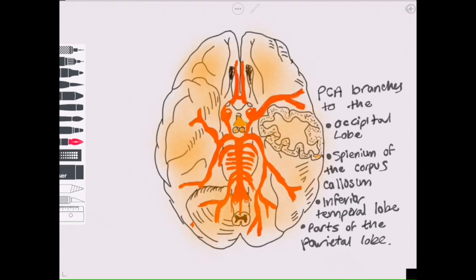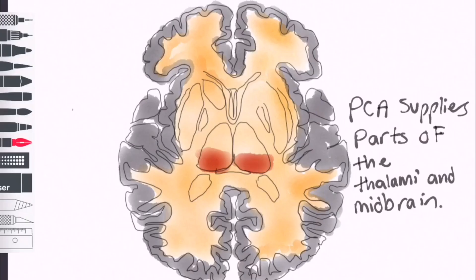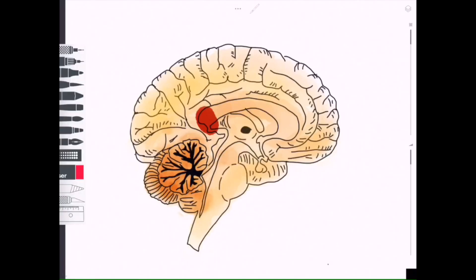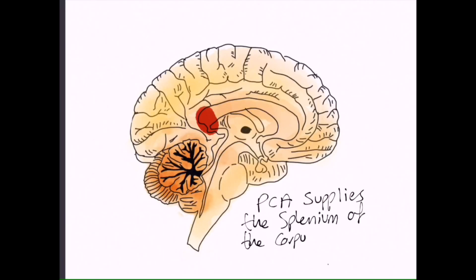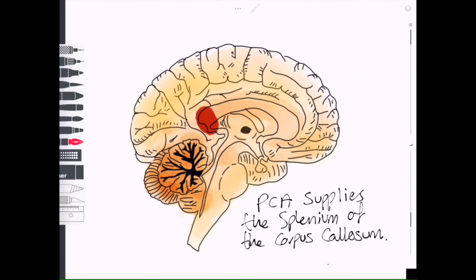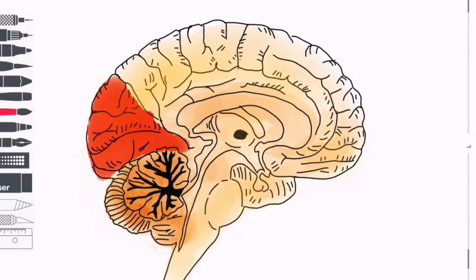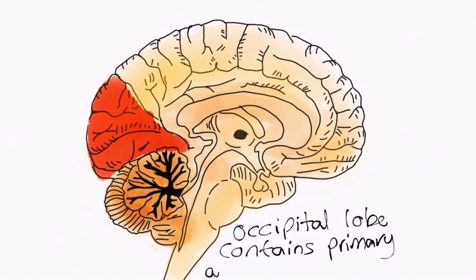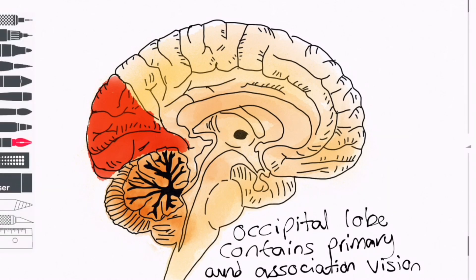Now we'll move on to talk about the function of the areas of the brain it supplies. The thalamus is an important relay centre for our ascending and descending tracts between the cortex and the body. The splenium of the corpus callosum carries fibres between the two occipital lobes. The occipital lobe contains the primary and association visual areas, which are important in the sensation and perception of visual stimuli. To revise this, watch our video on visual pathway lesions and field defects.